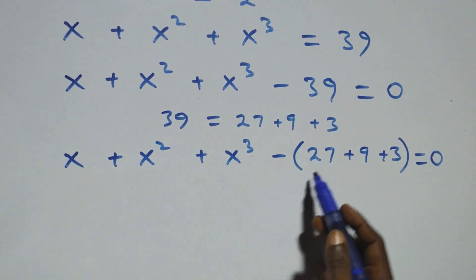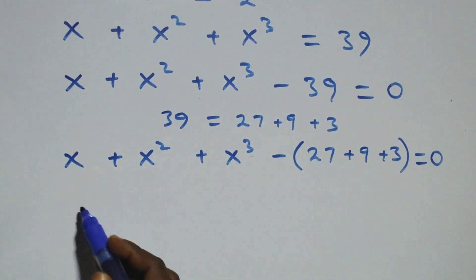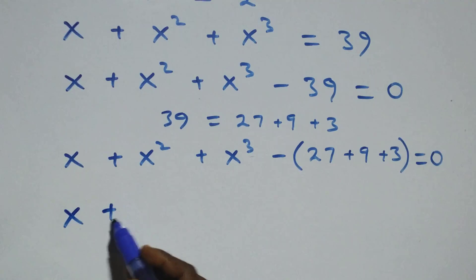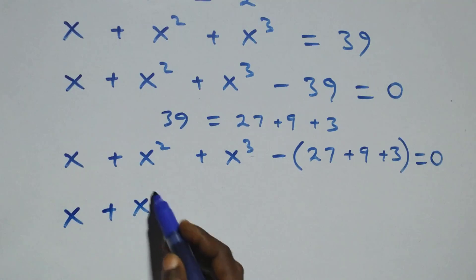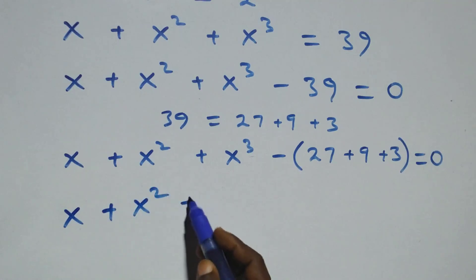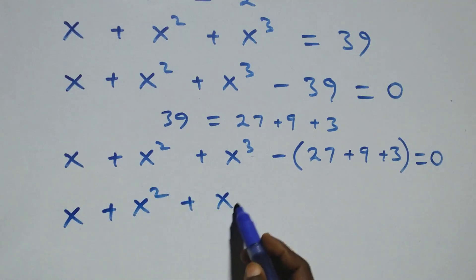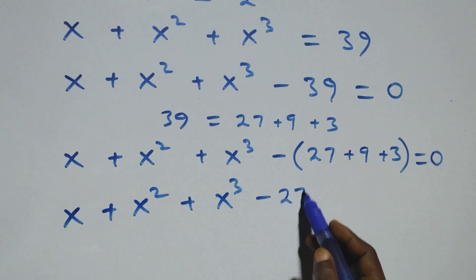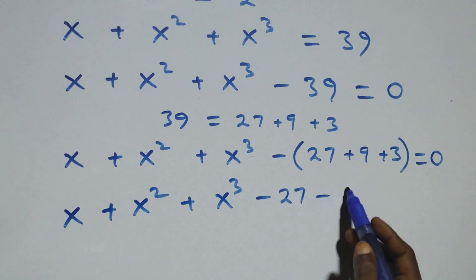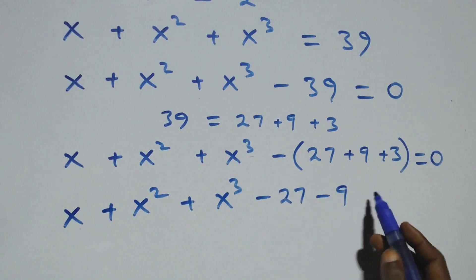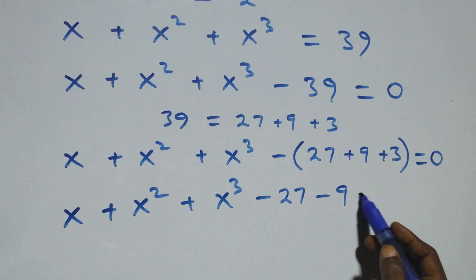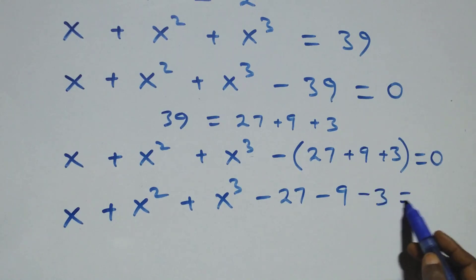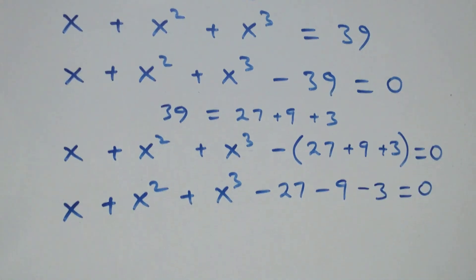Then also, we can expand and we have x plus x squared plus x cubed, then minus 27, minus 9, then minus 3, equals to 0 here.